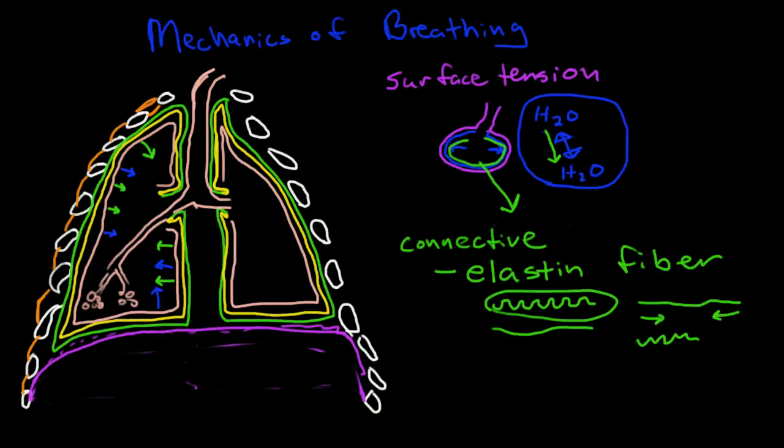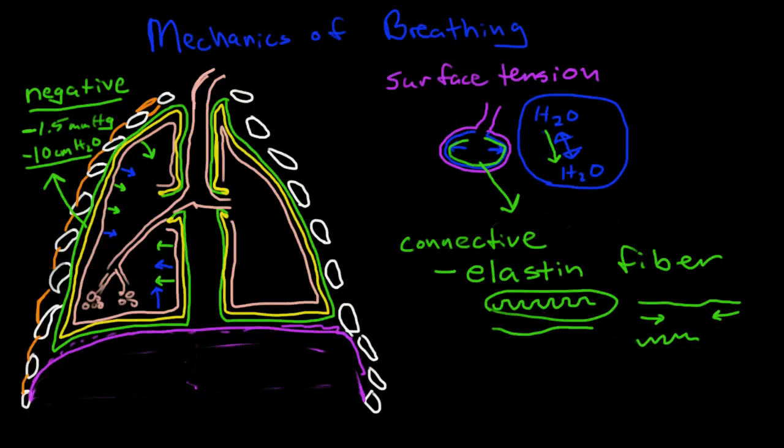So, this sort of potential space within the pleura always has a negative pressure because the lungs are always pulling inwards on it, and the chest wall is semi-rigid, so it's not going to get pulled in. So the pleura are sort of in between two forces where the lung is trying to collapse and the chest wall is trying to remain semi-rigid, so there is a constant negative pressure in the pleura space, and at rest it's about 1.5 millimeters of mercury or about 5 to 10 centimeters of water. These are both units of measurement for pressure.